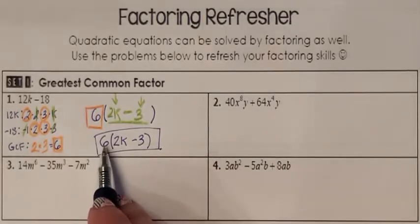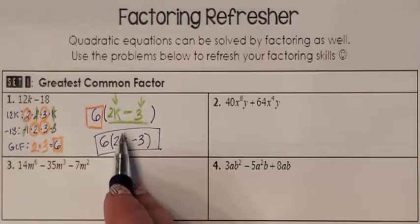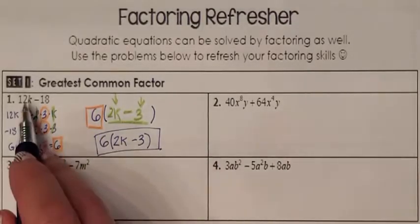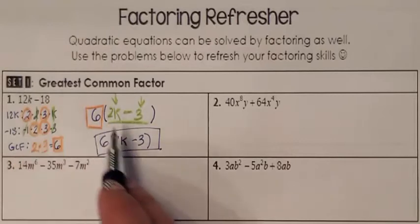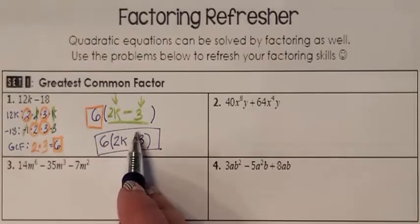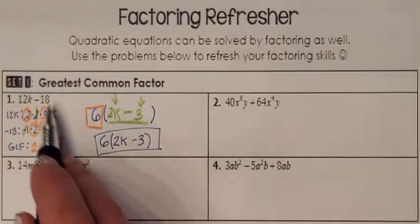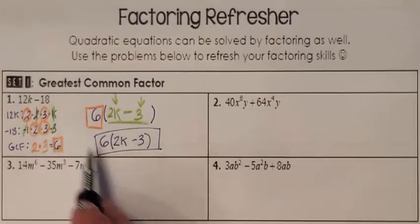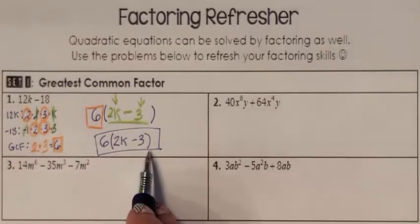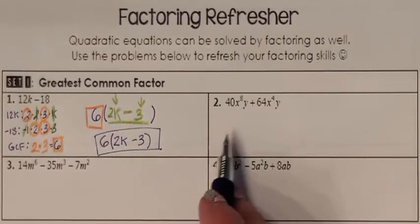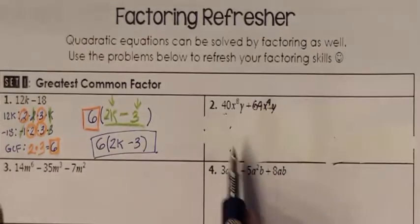Check yourself: 6 times 2K is 12K, and 6 times negative 3 is negative 18. So you know that you factored correctly. Let's go ahead and do that again with problem number 2.